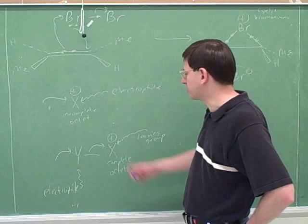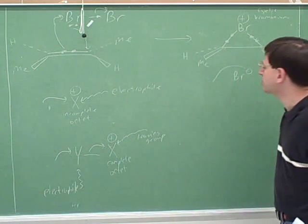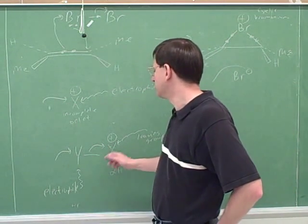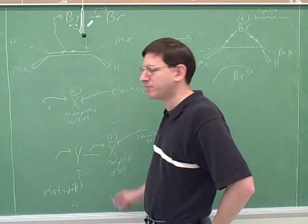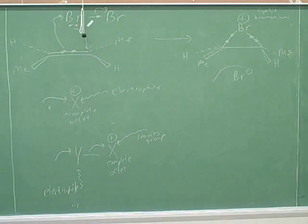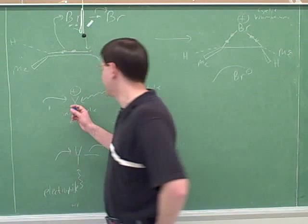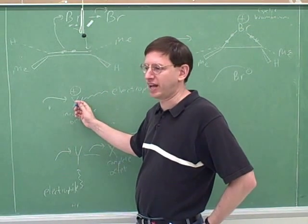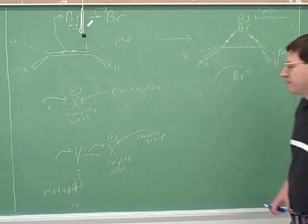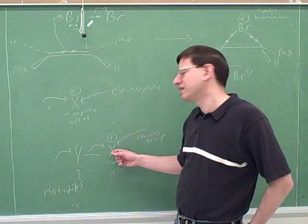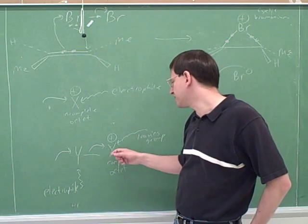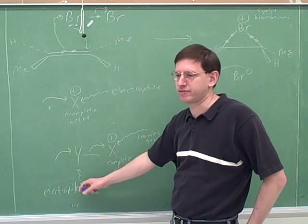This is going to be an important principle for the whole rest of the course. Positive charges either give you a good electrophile if you have an incomplete octet — which basically means a carbocation — or they give you a good leaving group attached to an electrophile if you have a complete octet. If the positive charge is on an atom with a complete octet, it can't be an electrophile because it doesn't have room for anyone to attack it.